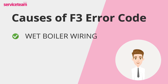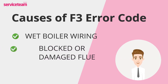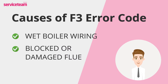Wet boiler wiring can cause several boiler issues, including the F3 fault code. Leaks from the heat exchanger or pump can lead to wet wiring, which triggers error codes and can cause the PCB to malfunction. A blocked or damaged flue also prevents the fan from expelling waste gases, triggering the F3 code. Regular flue maintenance is crucial to prevent this issue.